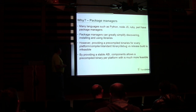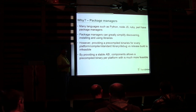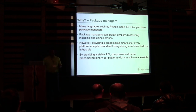So basically, if we can provide a stable ABI, we can have a precompiled binary per platform, which is a much more feasible option than having a precompiled binary for every compiler and standard library combination.